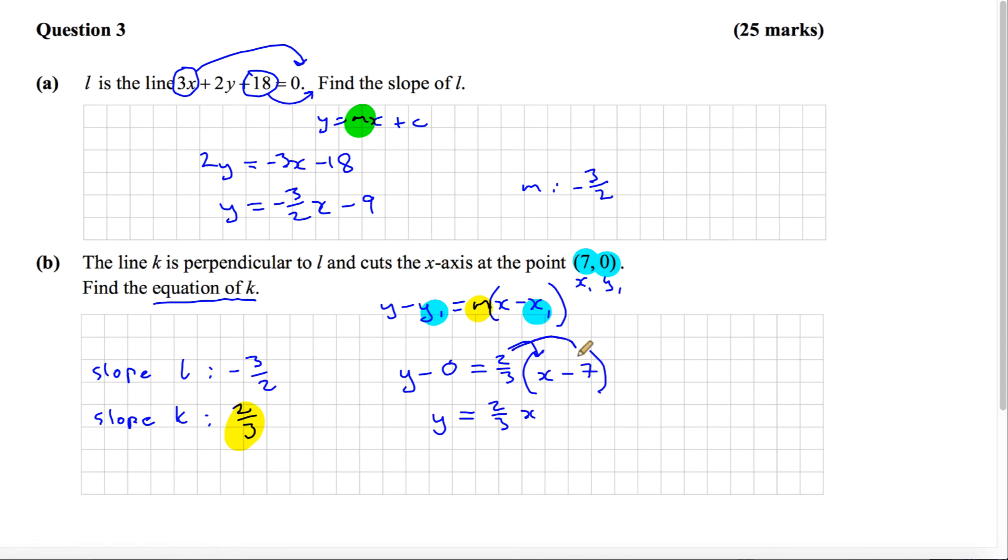And 2 thirds by negative 7 is minus 14 over 3. You can leave it in this form; they don't tell you to write it in any particular form. That's the end of part B.